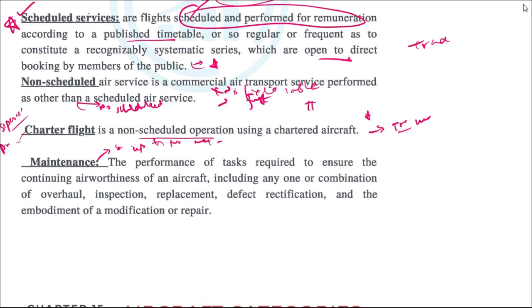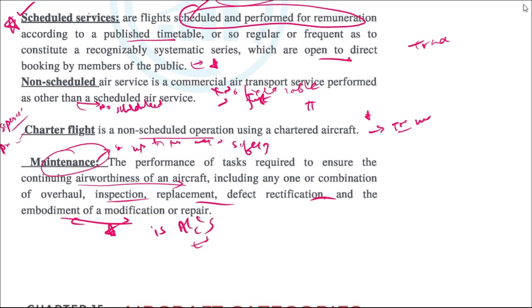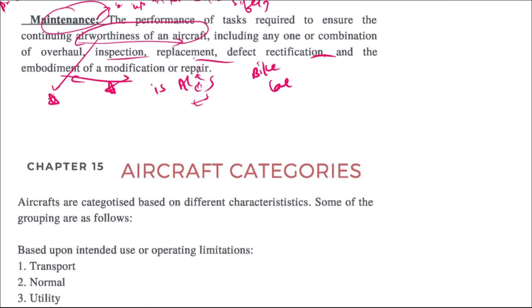The general definition of maintenance is the performance of tasks required to ensure the continuing airworthiness of an aircraft, including inspection, replacement, defect rectification, and combinations thereof. Just like bikes and cars need to be maintained, aircraft also need to be maintained to ensure their airworthiness.